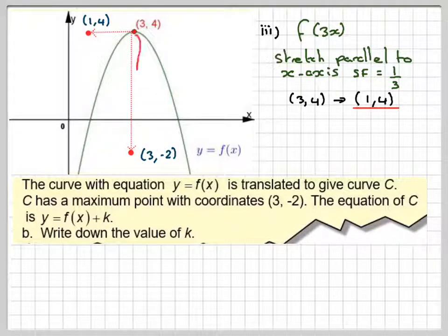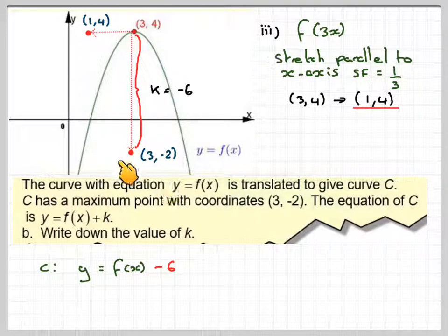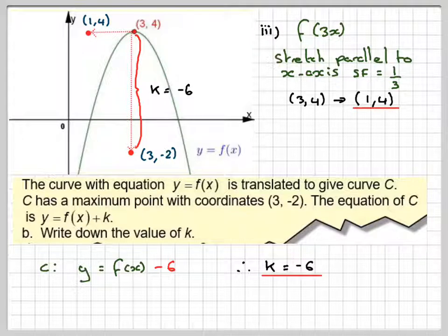From there to there, it is going down minus 6 units, which means that k has to be... This new curve will be y equals f of x minus 6. Therefore, k will be equal to minus 6. So there's been a video to show you how to do translations of a curve.